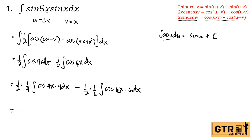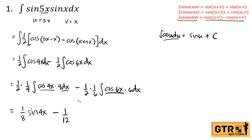So the final answer: one half times one fourth equals one eighth, giving us one eighth sin(4x). Then minus one half times one sixth equals one twelfth, giving minus one twelfth sin(6x) plus C. This is the final answer for number 1.